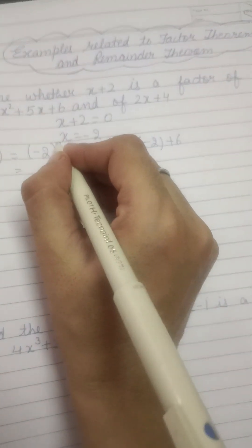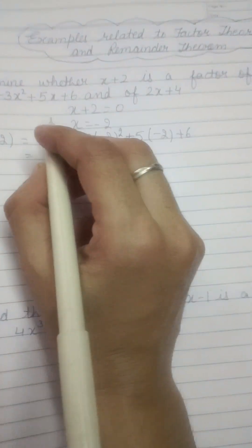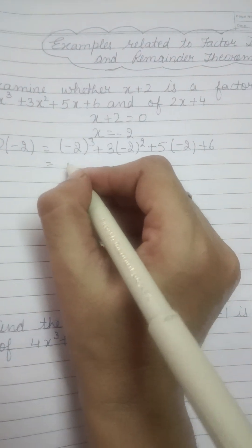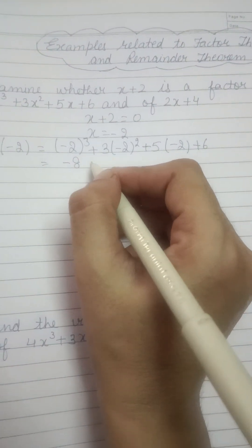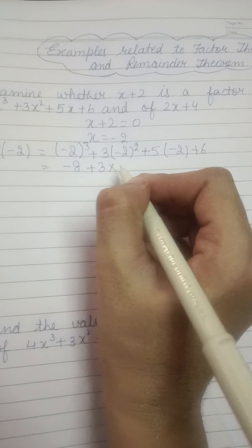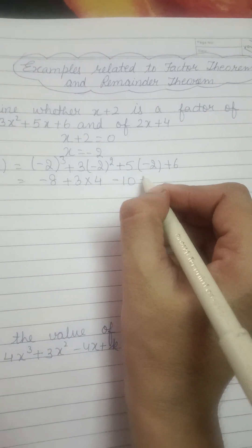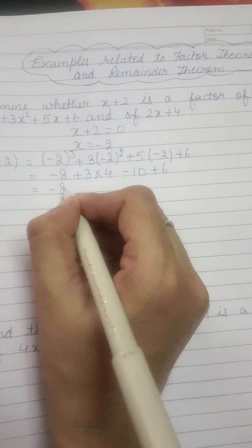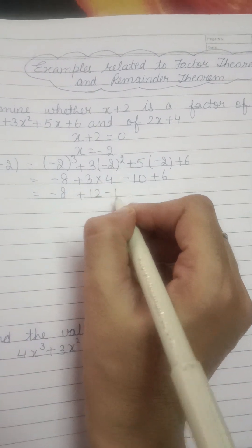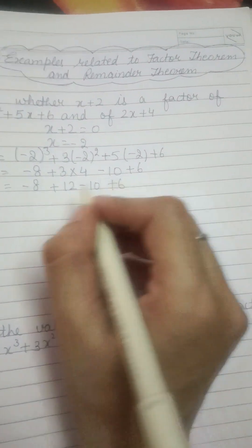Value करो. Minus 2 cube, cube हो रहा है minus 2 का. It will be minus 8 plus 3. Minus 2 का square 4 minus 10 plus 6 minus 8 plus 12 minus 10 plus 6.